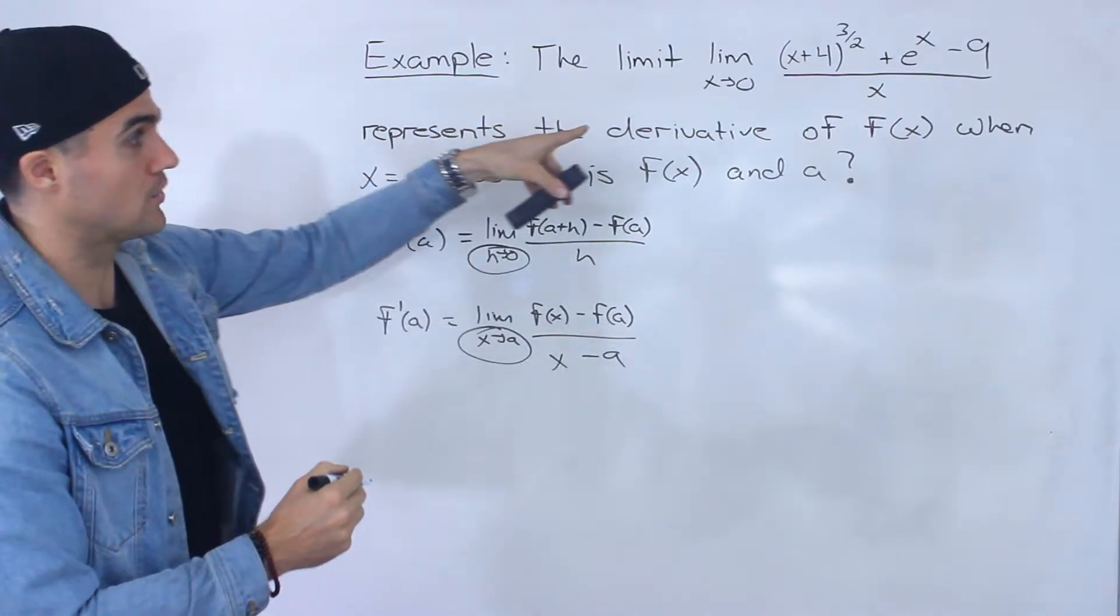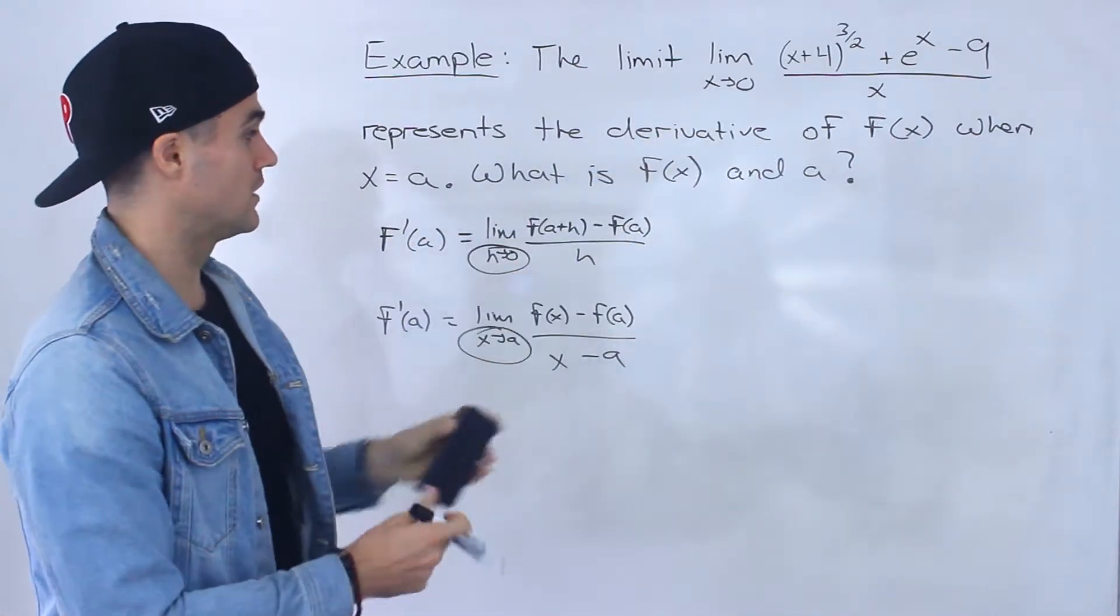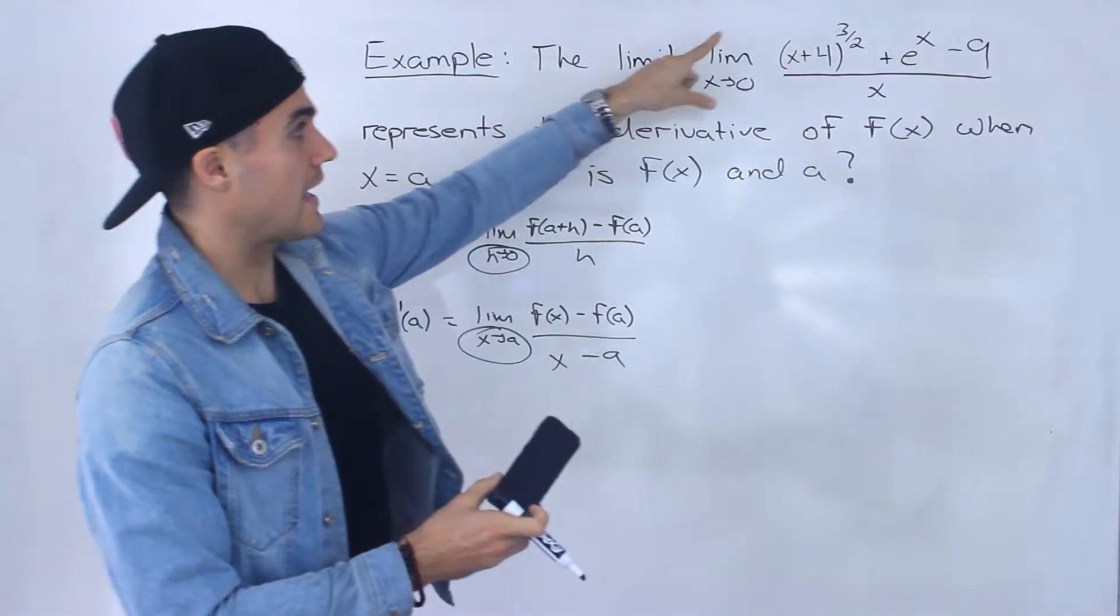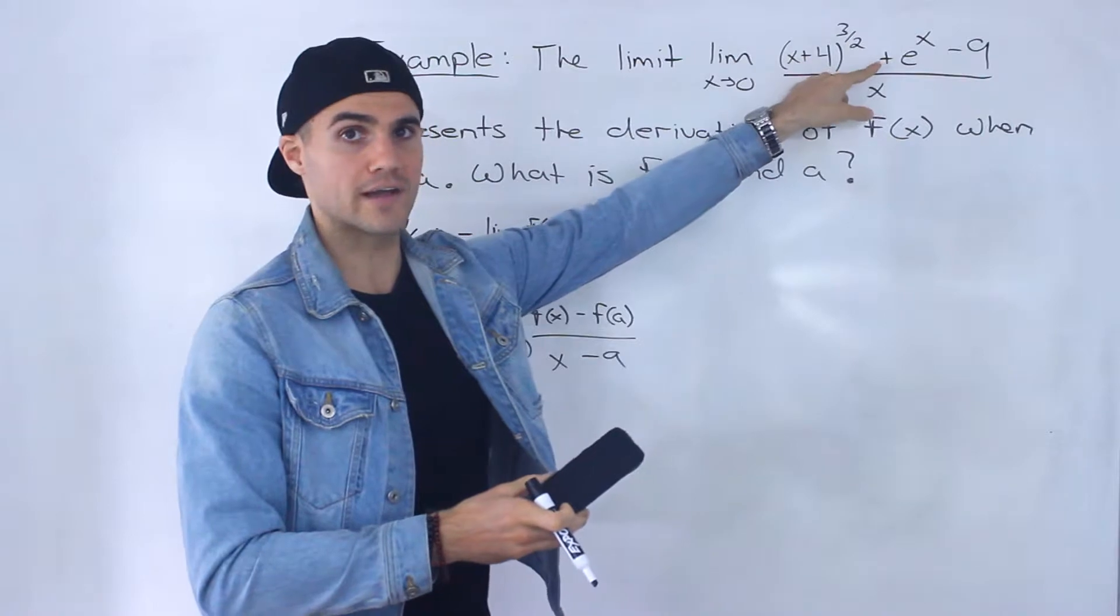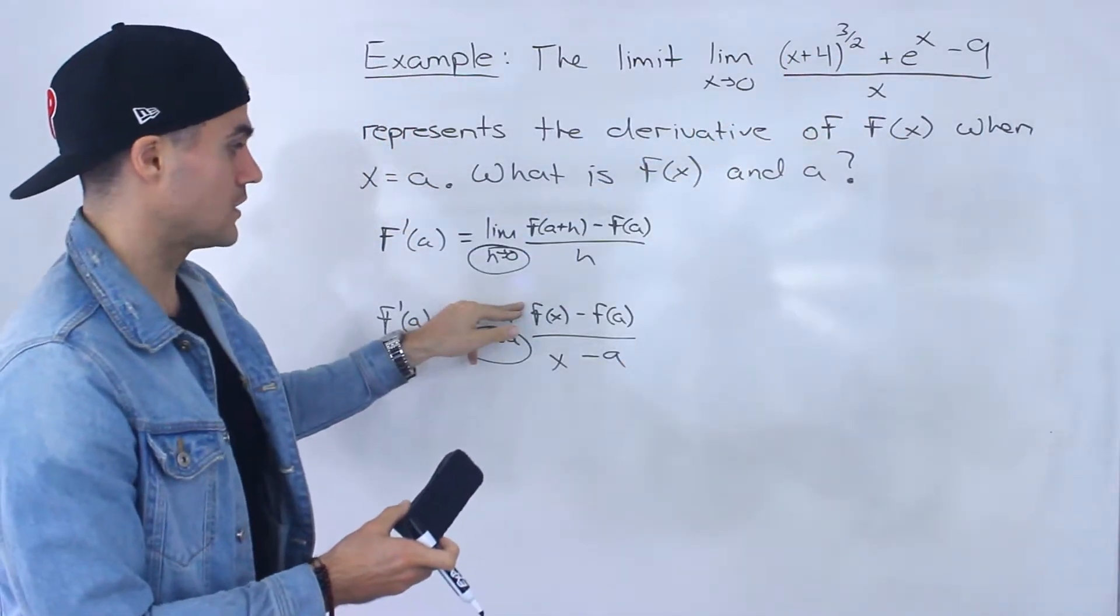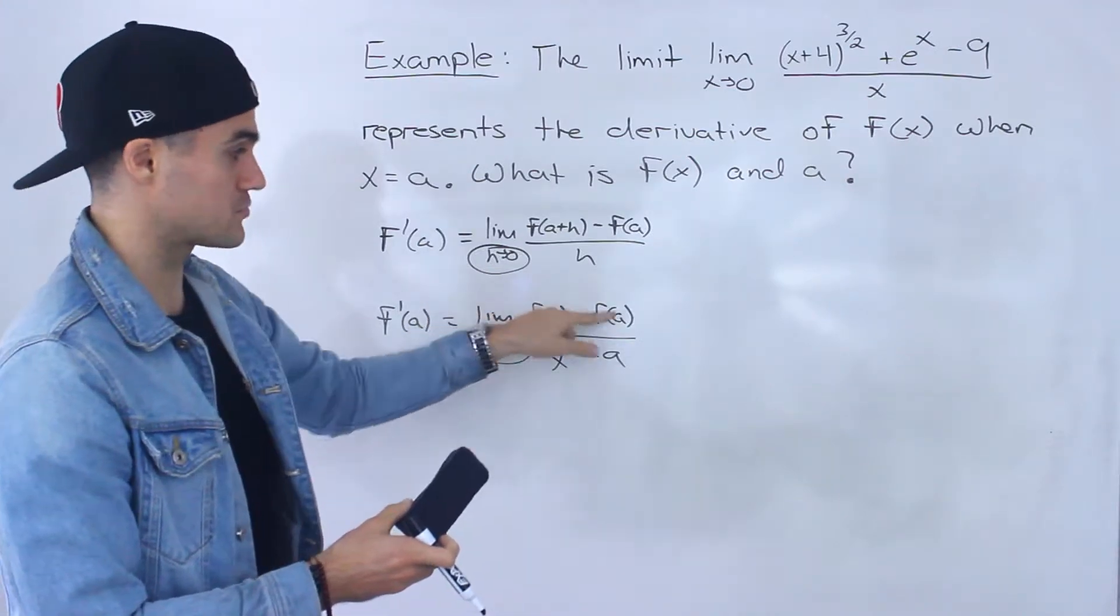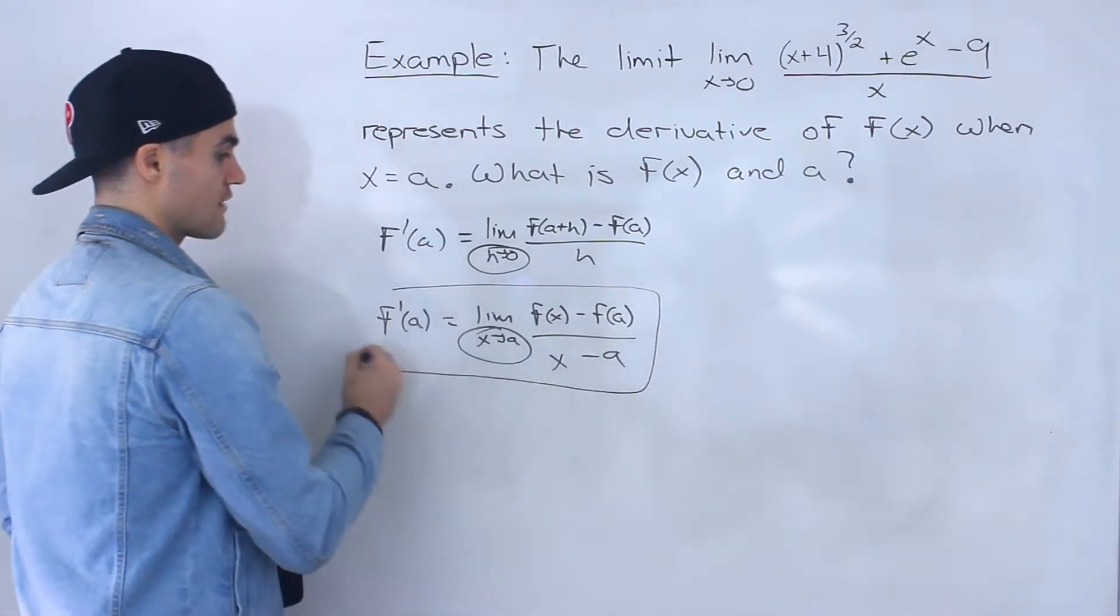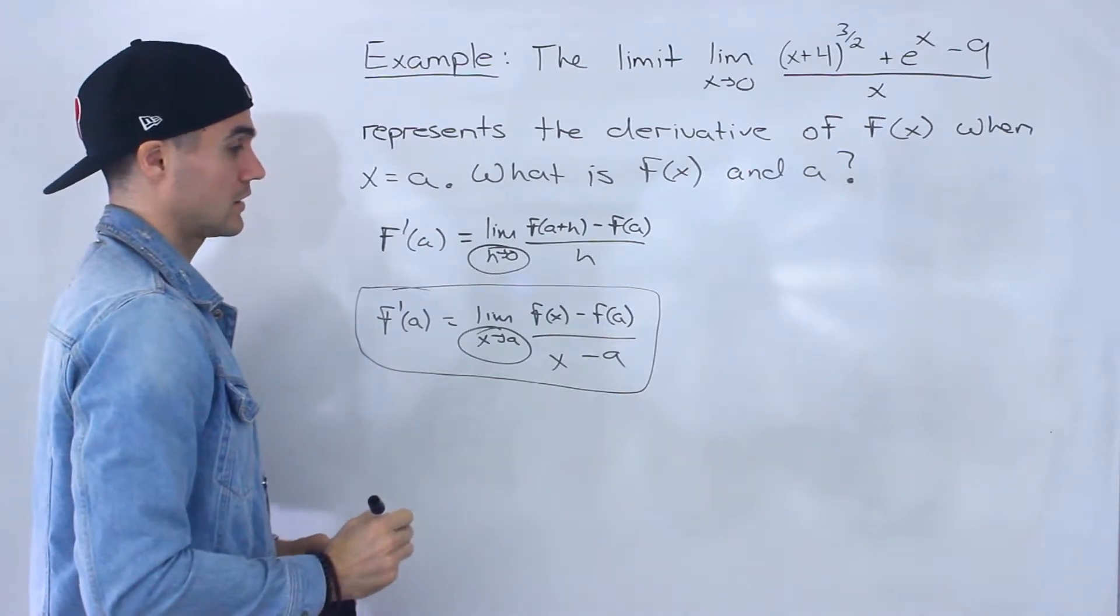If you look at this limit, notice we have x approaching 0. We don't have h approaching 0. If it was in this format you would see like x+h+4 to the power of 3/2 or e to the power of x+h. But the fact that the x's are by themselves, we know that we're dealing with just f(x) in that numerator, and we're going to be subtracting f(a). So overall we know we're working with this definition over here for this particular limit.